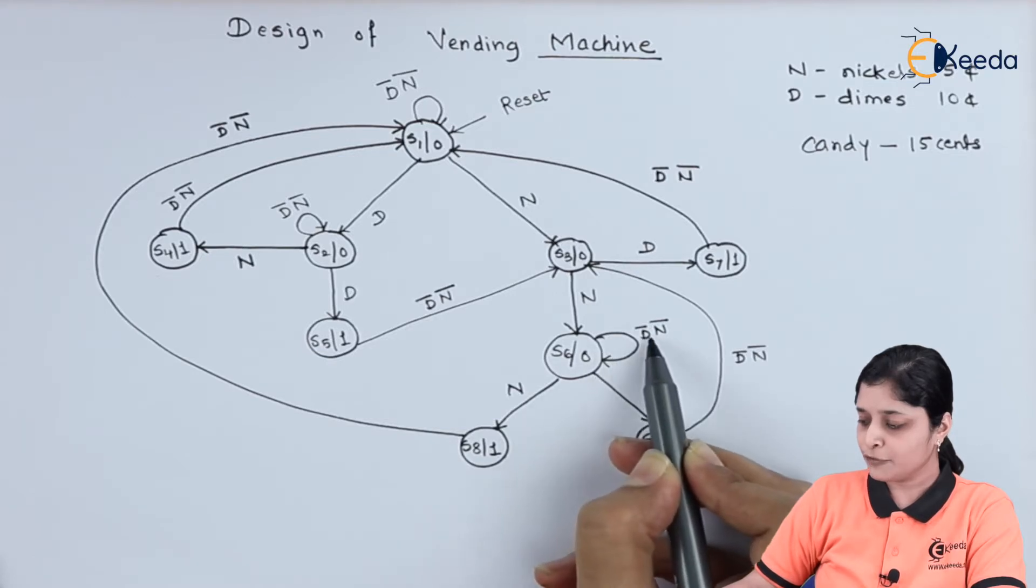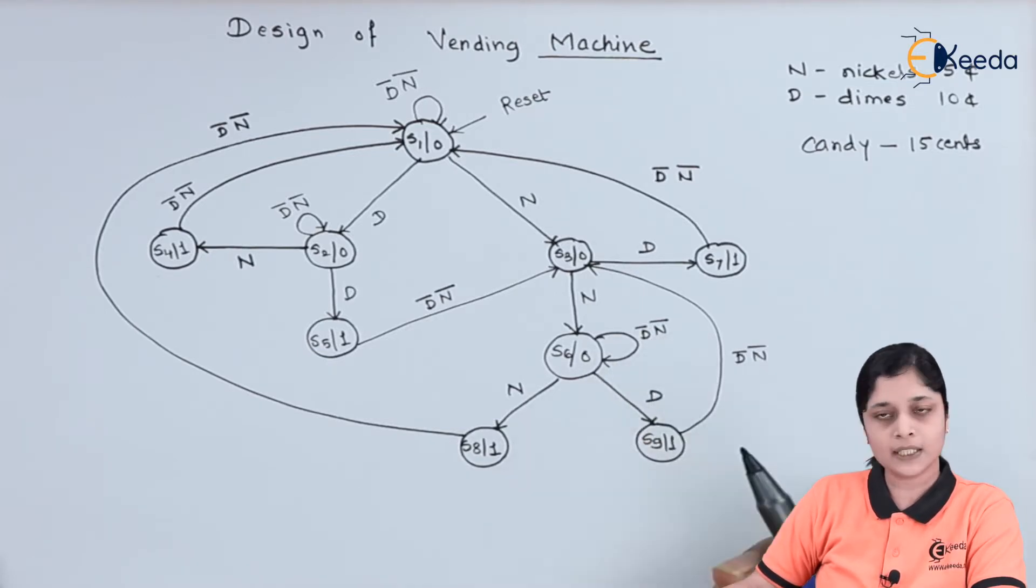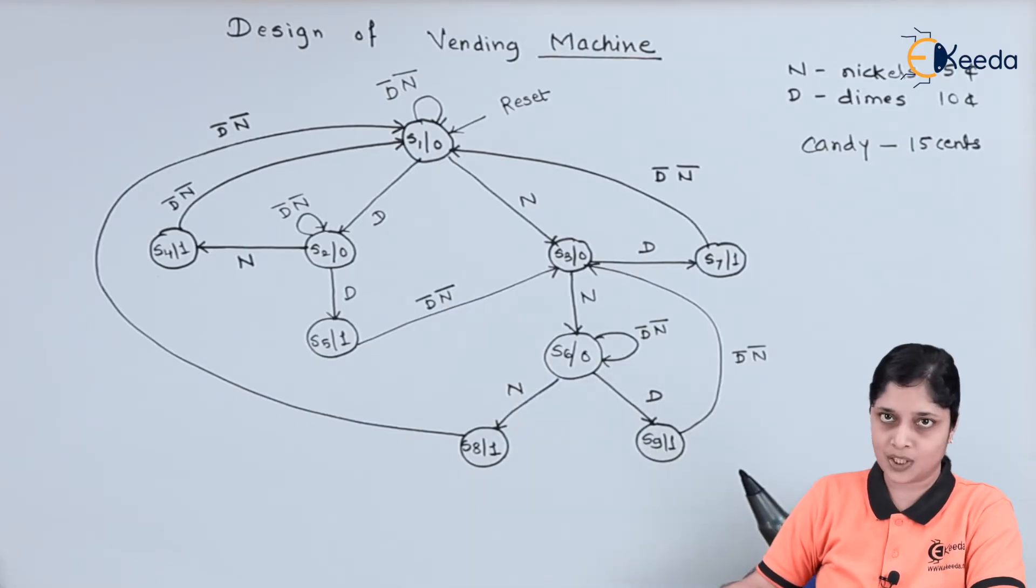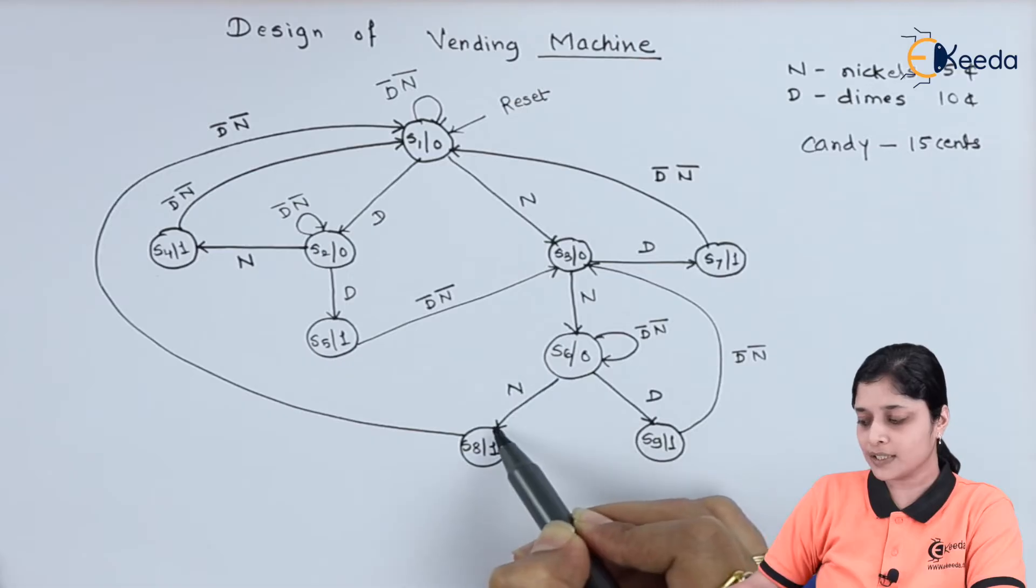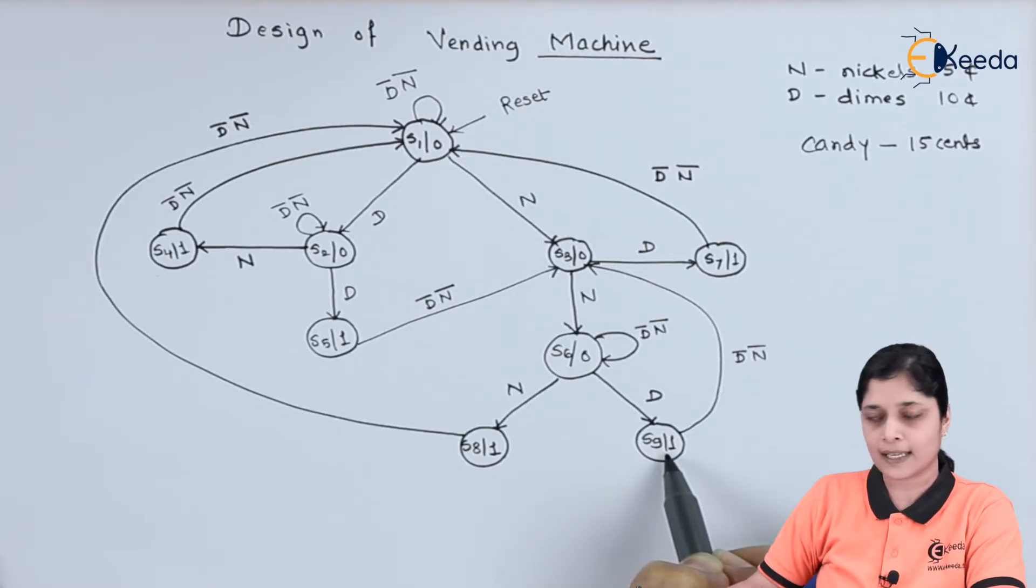If both are 0, then it will remain in same state. Again, there is a possibility that if nickel is inserted, it will go to state S8. If dime is inserted, it will go to state S9.